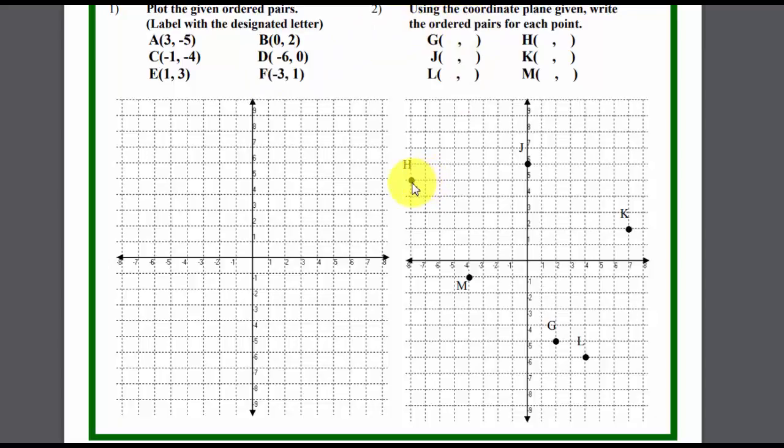However, in part 2, you will have already placed the dots where they are located. So for example, for G, G is located at X equals 2, Y equals negative 5. So when they correct it,